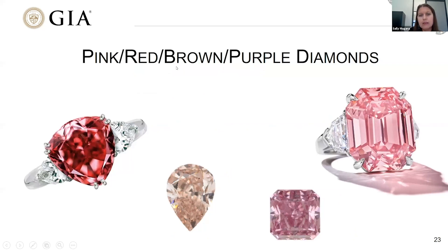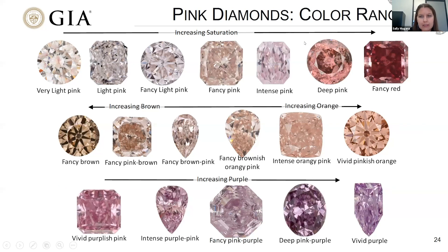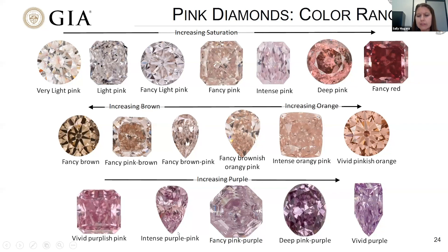Moving on to pink, red, brown, and purple diamonds — there are many colors under that pink umbrella because most have a similar cause of color, and most contain the 550 nanometer absorption band. The color range varies: pure pink can vary from very light up to fancy red; plastic deformation adds a brownish contribution; if the 550 nanometer band is shifted and broadened slightly, that imparts an orange coloration; and if there's no nitrogen-related absorption and the band is quite wide, you can also see a purple color.